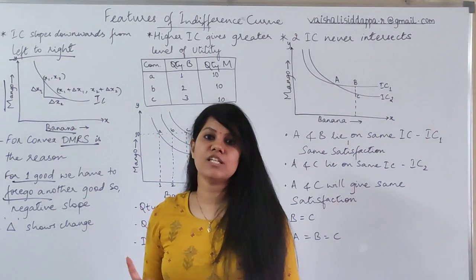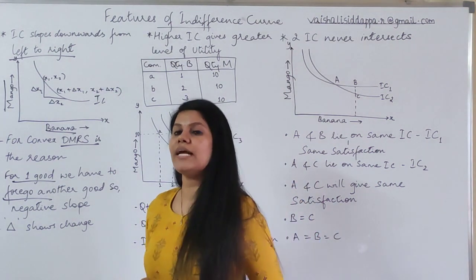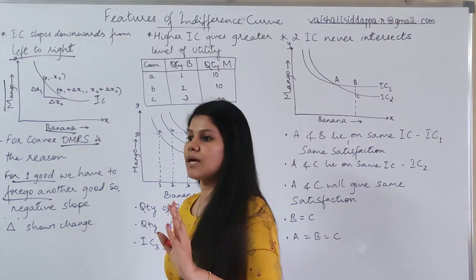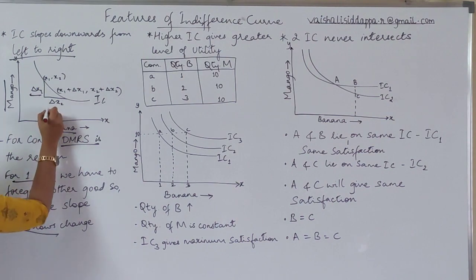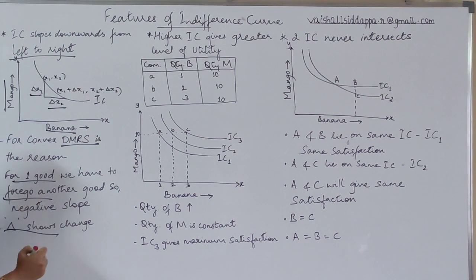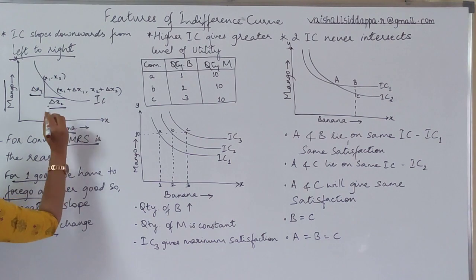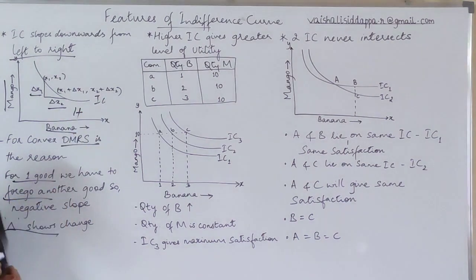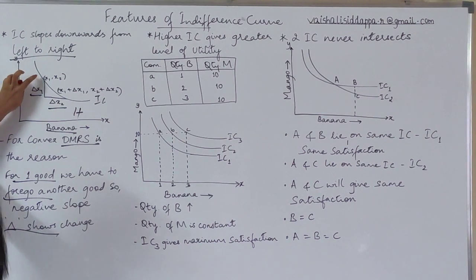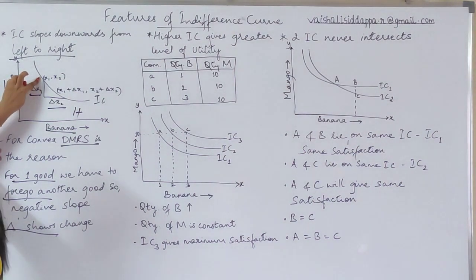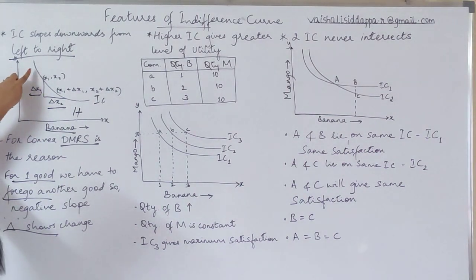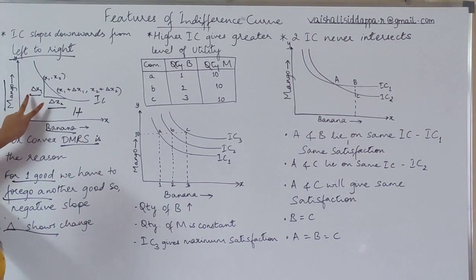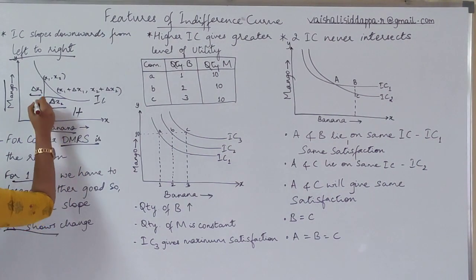In economics, whenever we talk about delta, that means we are talking about something that has changed. So you can see here delta x1 and delta x2. That means if you want to purchase more banana — say two units are getting added — you have to forgo some units of x1. If you want to buy x2, you have to sacrifice x1. If you want to buy x1, you have to sacrifice x2. Both goods will be changing, and to represent that change, we write delta here.